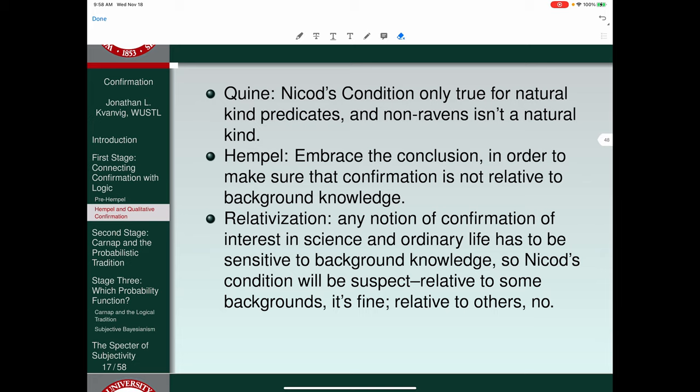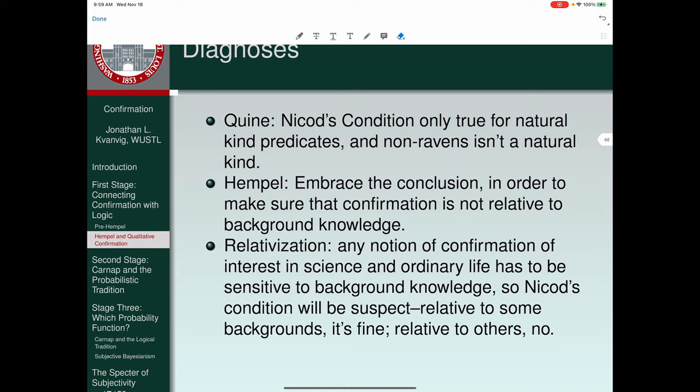A different approach relativizes. It says, any notion of confirmation of interest in science or ordinary life has to be sensitive to background knowledge. So Nicod's condition would be suspect relative to some background context is fine. Relative to others, it's not fine. So if you go back to that slide that preceded the picture of the Enigma code, the point of I.J. Good's five background contexts is precisely this notion of relativization. Confirmation is simply not a relation between evidence and hypotheses alone. It is instead at least a three-place relation between evidence, background information, and a hypothesis. That brings us to the end of stage one of our inquiry. So I'm going to stop this video and we'll pick up the next time with stage two, which is the end of stage two, when Rudolf Carnap enters the story.